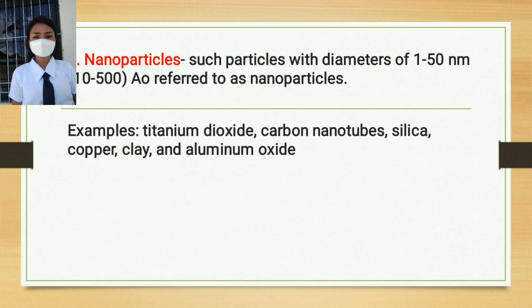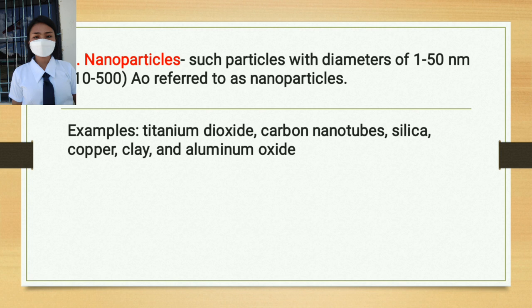Next, we have nanoparticles. These are particles with diameters of 1 to 50 nanometers, or 10 to 500, referred to as nanoparticles. These are smaller than nanomaterials — meaning you divide nanomaterials into even smaller pieces to get nanoparticles. Examples are titanium dioxide, carbon nanotubes, silica, copper, clay, and aluminum oxide.